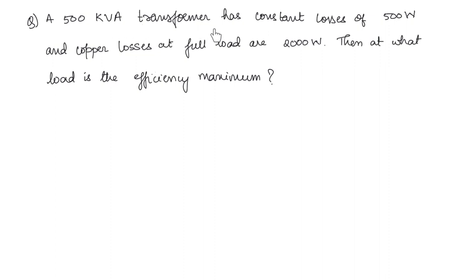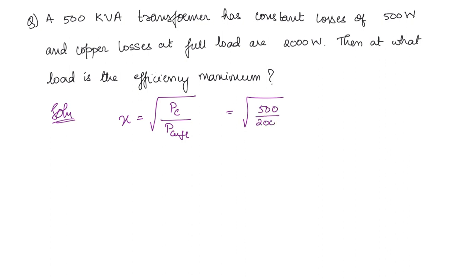A 500 kVA transformer has constant losses of 500 watts and full load copper losses of 2000 watts. At what load is efficiency maximum? The fraction x = √(constant losses / full load copper losses) = √(500/2000) = 1/2. Since the rated output is 500 kVA, the load at maximum efficiency is x × 500 = 250 kVA.